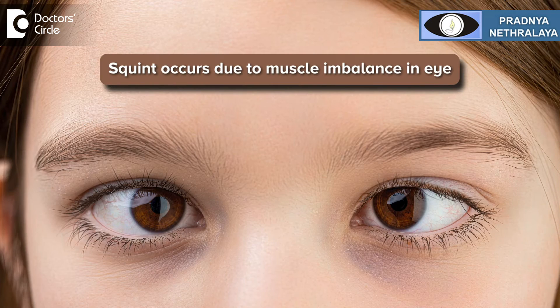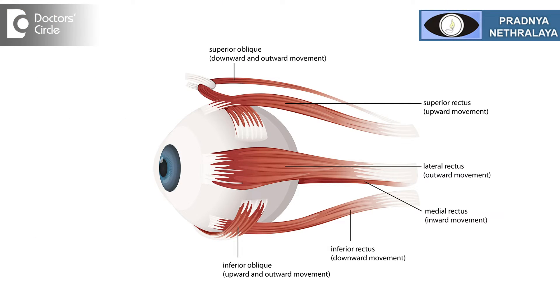Strabismus, or what is commonly called a squint, occurs because of a muscle imbalance in the eye. There are six muscles in each eye, which are in turn controlled by three nerves. All six muscles work in unison in both eyes — a total of 12 muscles working together.